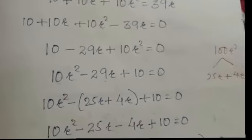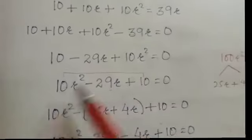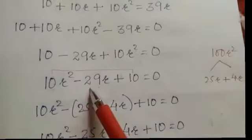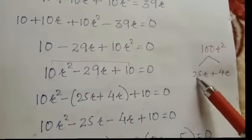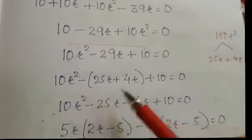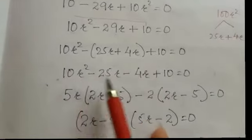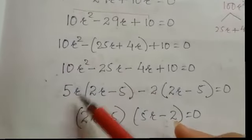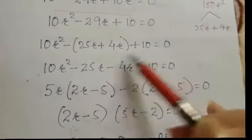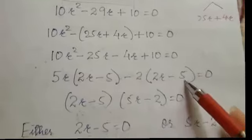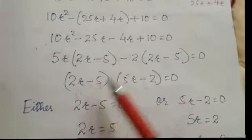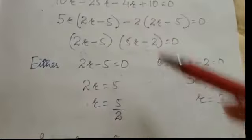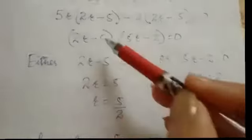Multiply first and last terms: 10r squared into 10 is 100r squared. We need factors of 100 that add to 29: 25 and 4 work since 25 plus 4 is 29. Splitting: (10r squared minus 25r) minus (4r minus 10) equals 0. Taking out common: 5r(2r minus 5) minus 2(2r minus 5) equals 0, so (2r minus 5)(5r minus 2) equals 0. Either r equals 5 by 2 or r equals 2 by 5.